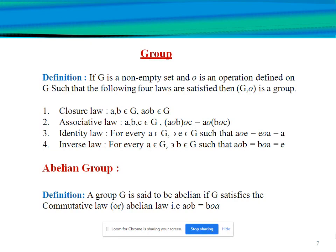Here e is the identity element. Fourth, inverse law: for every a belonging to G, there exists b in G such that a∘b = b∘a = e. Next, the definition of abelian group: a group G is said to be abelian if G satisfies the commutative law, that is a∘b = b∘a.